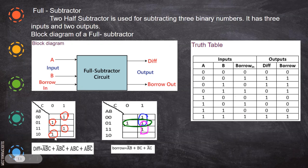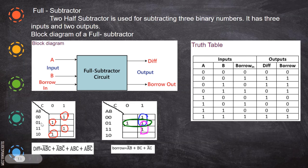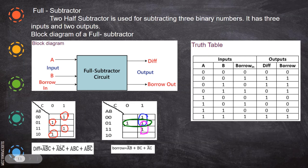For the difference output: difference is one means A-bar B-bar C, then A-bar B C-bar, then A B-bar C-bar, and then all ones — one one one. You cannot form any pairs of groups, so you have to handle those cells individually and draw the circuit accordingly, giving you the difference equation.